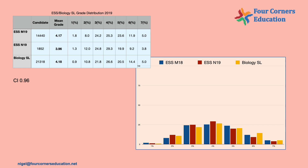Students electing to take Environmental Systems in the May exam session tend to be very similar to students electing to take Biology, and the grade distribution is very similar. Certain years Biology does better in some areas; other years Environmental Systems does better. But one thing to take into account is that there are many fewer students undertaking Environmental Systems. There is no real statistical significance between any of the grade boundaries — the confidence interval is 0.96.